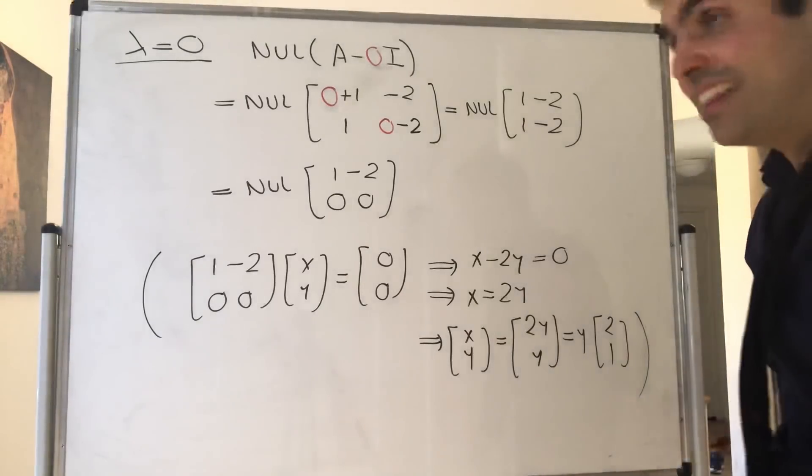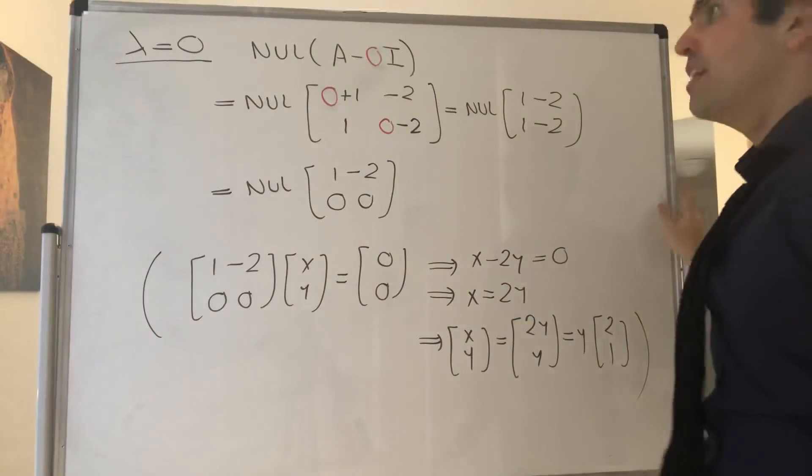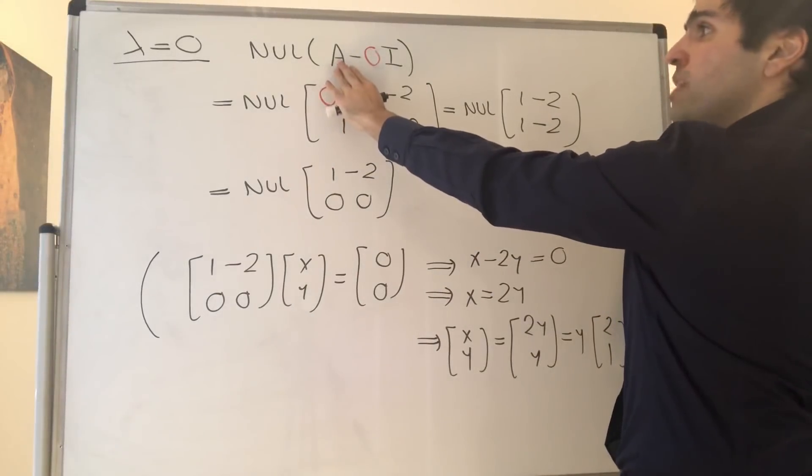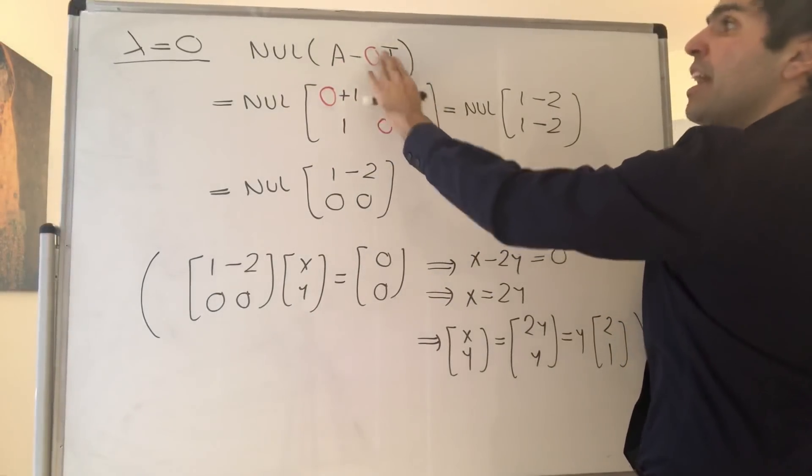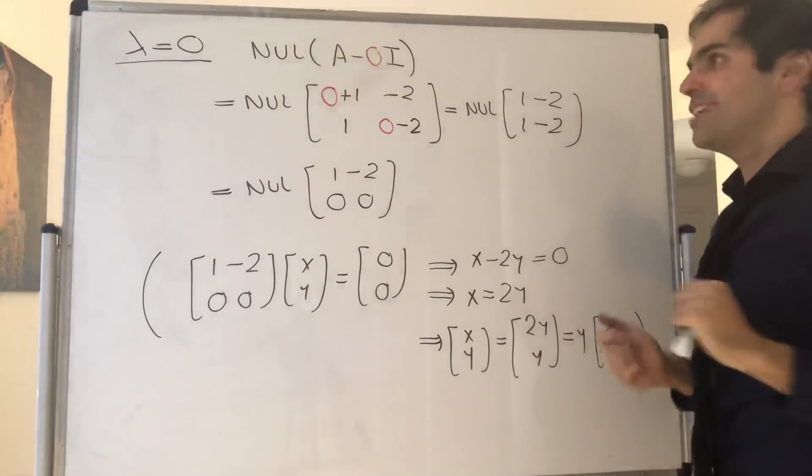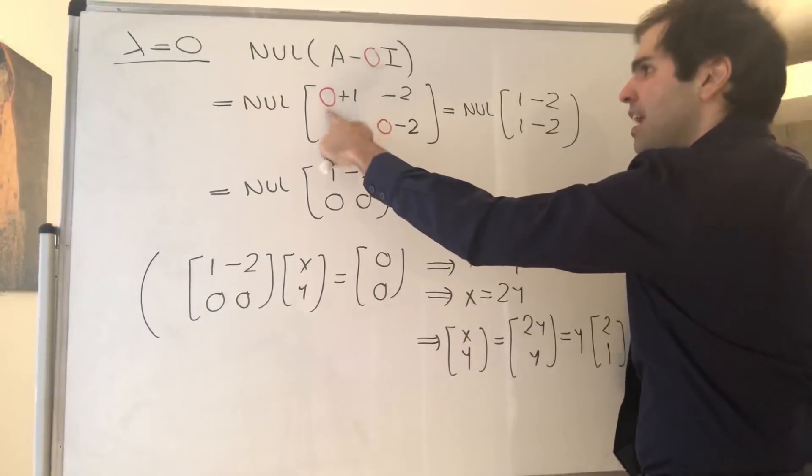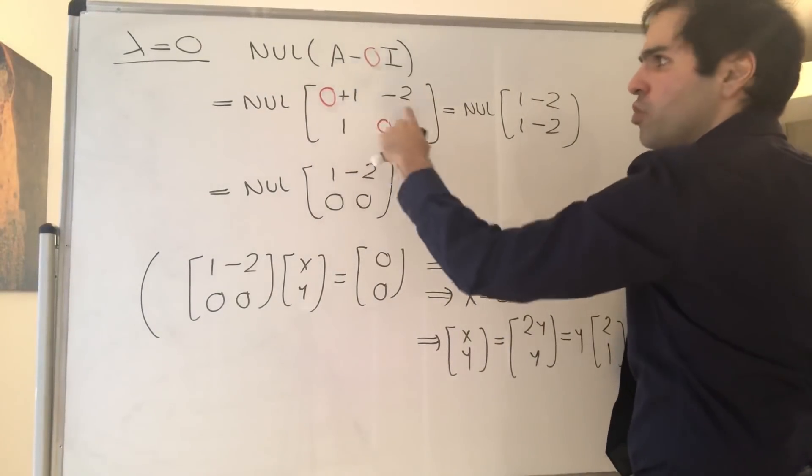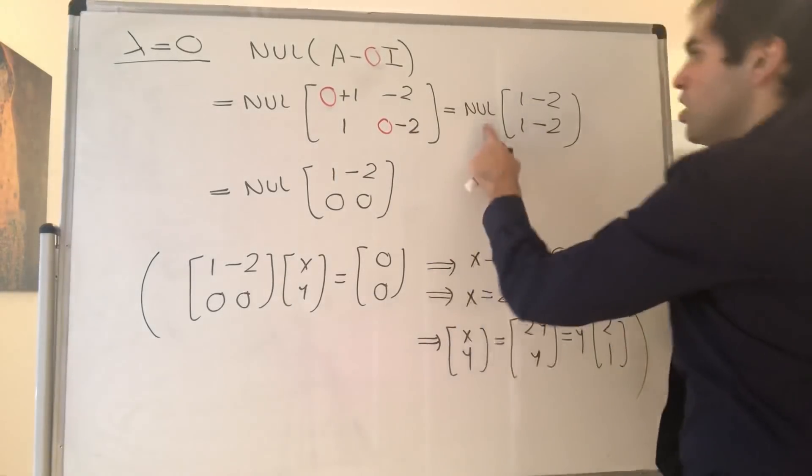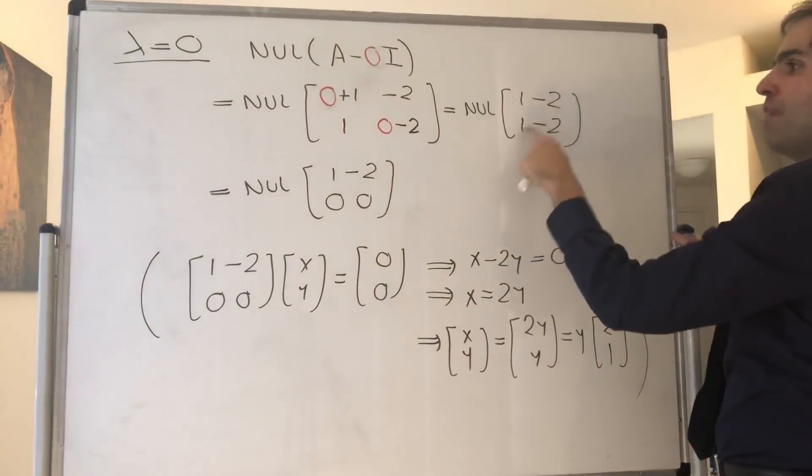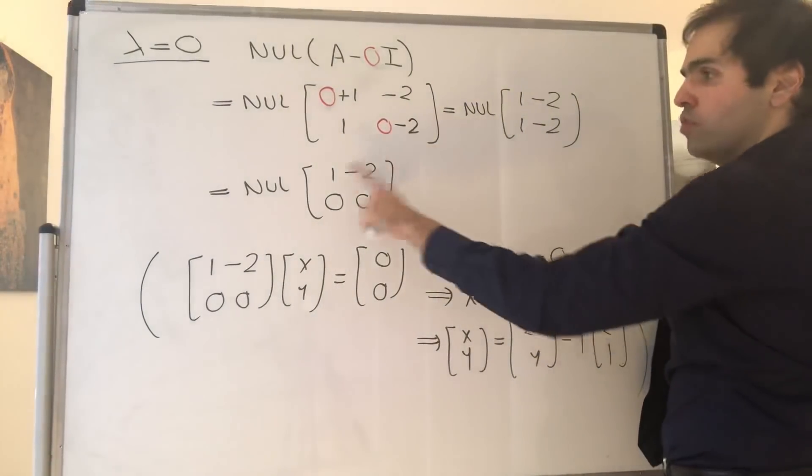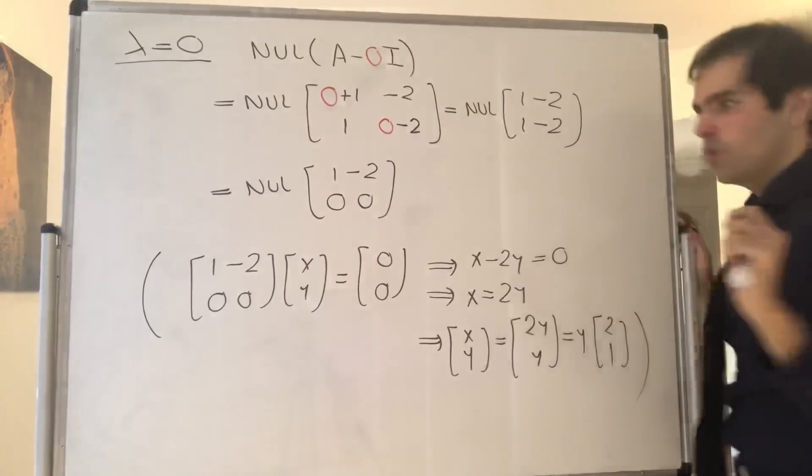Now let's find the eigenvector corresponding to lambda equals 0. This just means you have to find the null space of A minus lambda I, but where lambda is 0. For this, you just go back to the previous equation and plug in lambda equals 0 in your matrix. So 0 plus 1, minus 2, 1, 0 minus 2, which becomes the null space of [1, -2; 1, -2]. To find the null space, you just row reduce to get [1, -2; 0, 0].